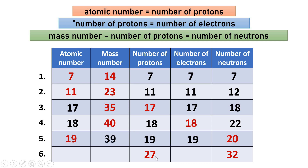For number six, the given values are 27 protons and 32 neutrons. Since the atomic number equals the number of protons, the atomic number is 27. Since the atom is neutral, the number of electrons is also 27. To get the mass number, we add the number of protons and neutrons: 27 plus 32 equals a mass number of 59.